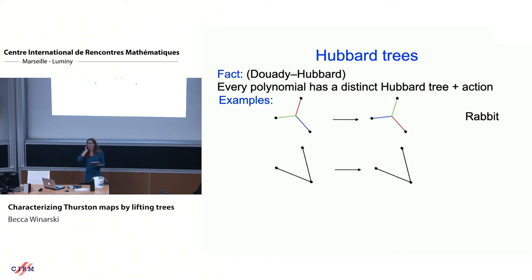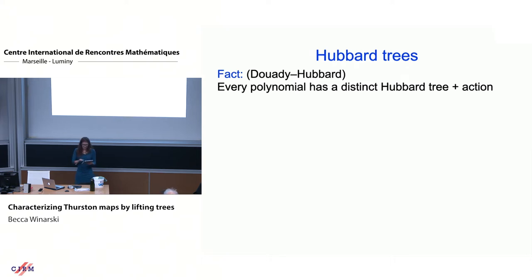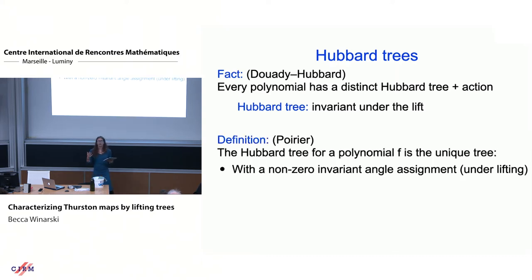We allow abstract embeddings in the complex plane, not constrained by numerical data. The key feature is that the Hubbard tree is invariant under the lifting map. We use Poirier's characterization: the Hubbard tree for a polynomial is the unique tree with a non-zero invariant angle assignment under lifting. I assign angles to every angle in the tree, lift to the pre-image, and when taking the hull I combine — add — some angles together.